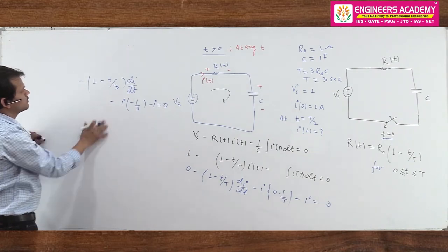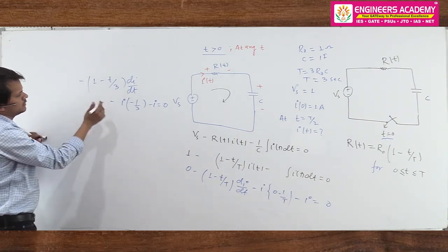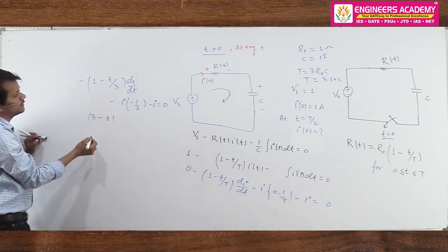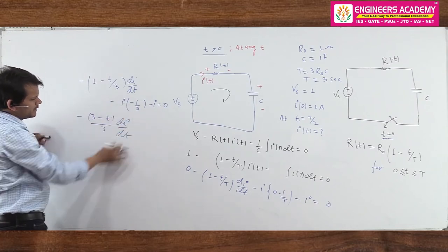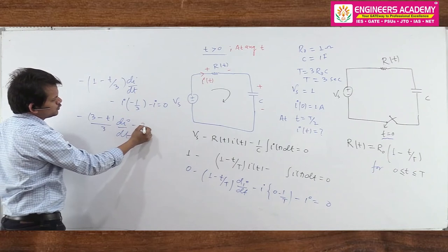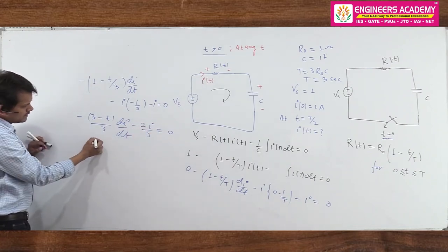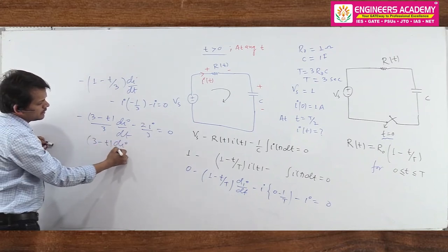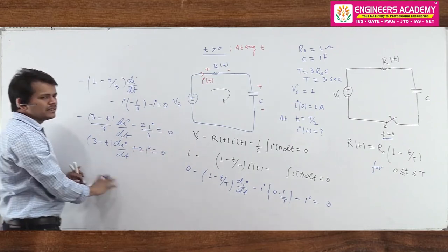After simplification, using T = 3 (since T = 3·R0·C = 3·1·1 = 3), the differential equation becomes: (3 - t)·dI/dt - I + 2I = 0, which simplifies to: (3 - t)·dI/dt + 2I = 0. This is a simple first-order ODE.